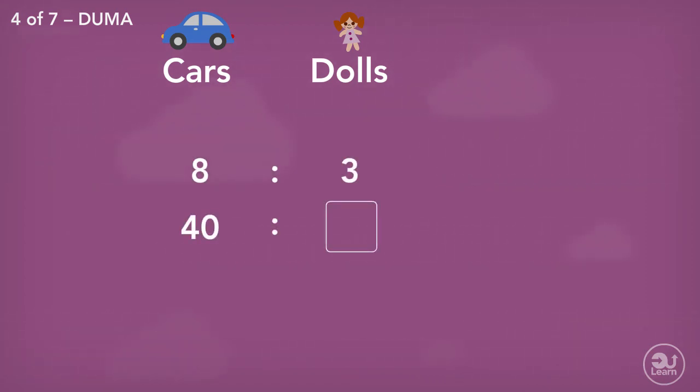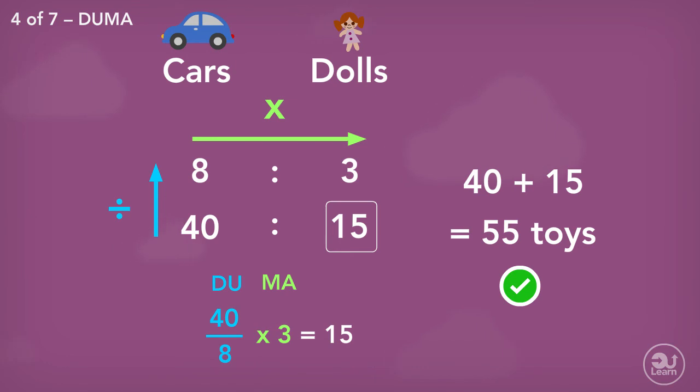A quick example. Ratio of toy cars to dolls in the bag is 8 to 3. There are 40 cars in the bag. How many toys in total? We lay out our ratios, divide up, multiply across. All that is left to do is add the two values together.